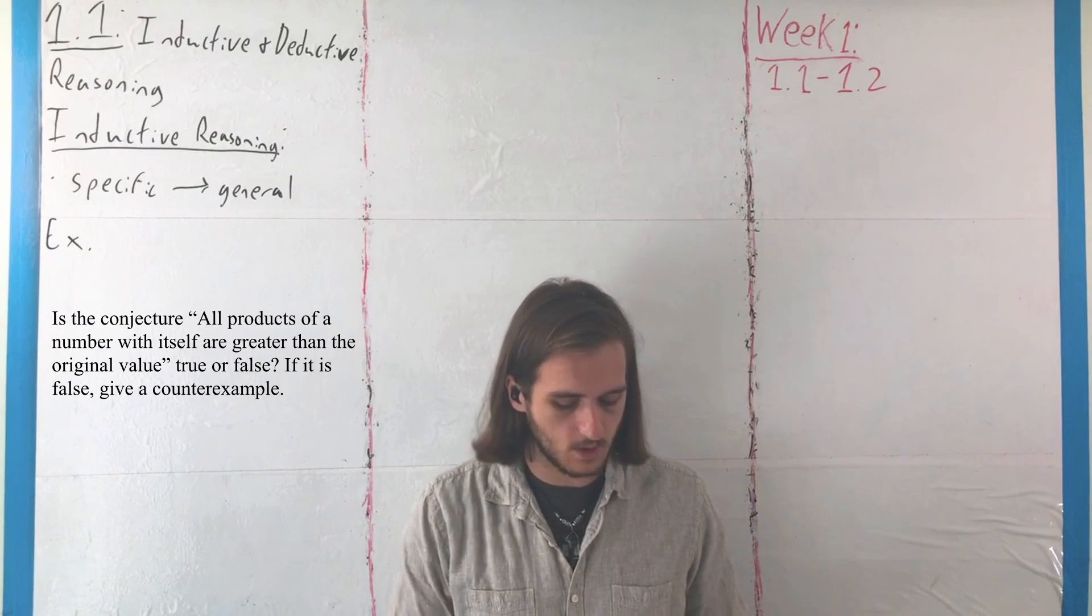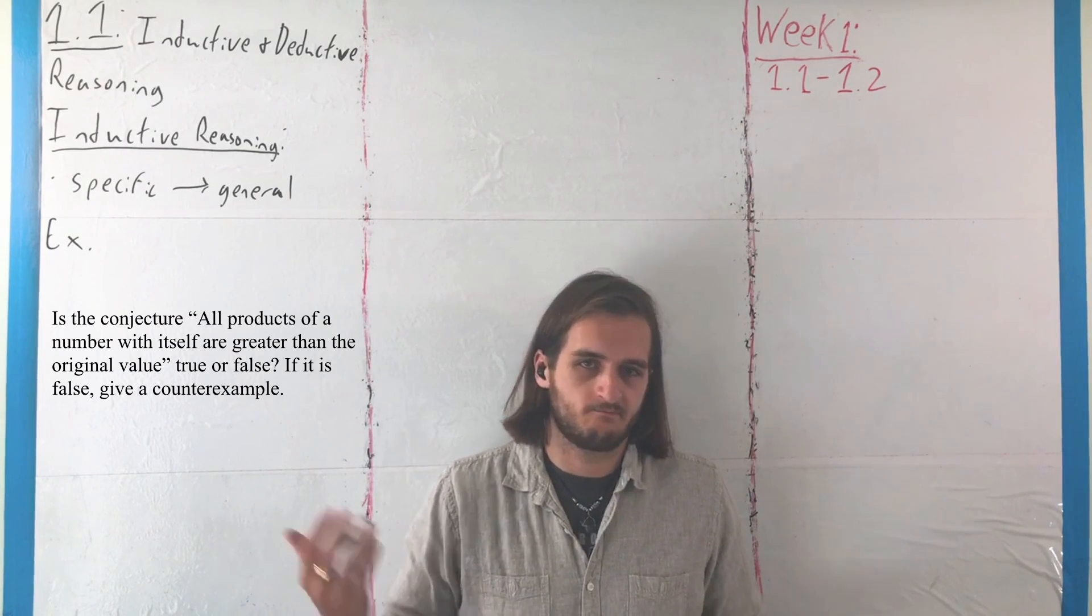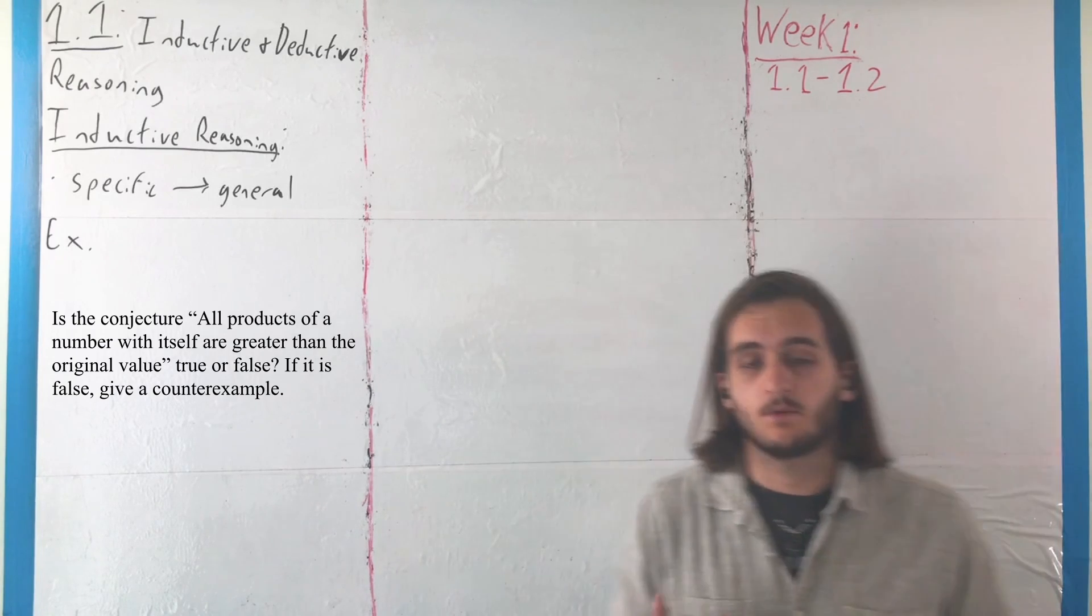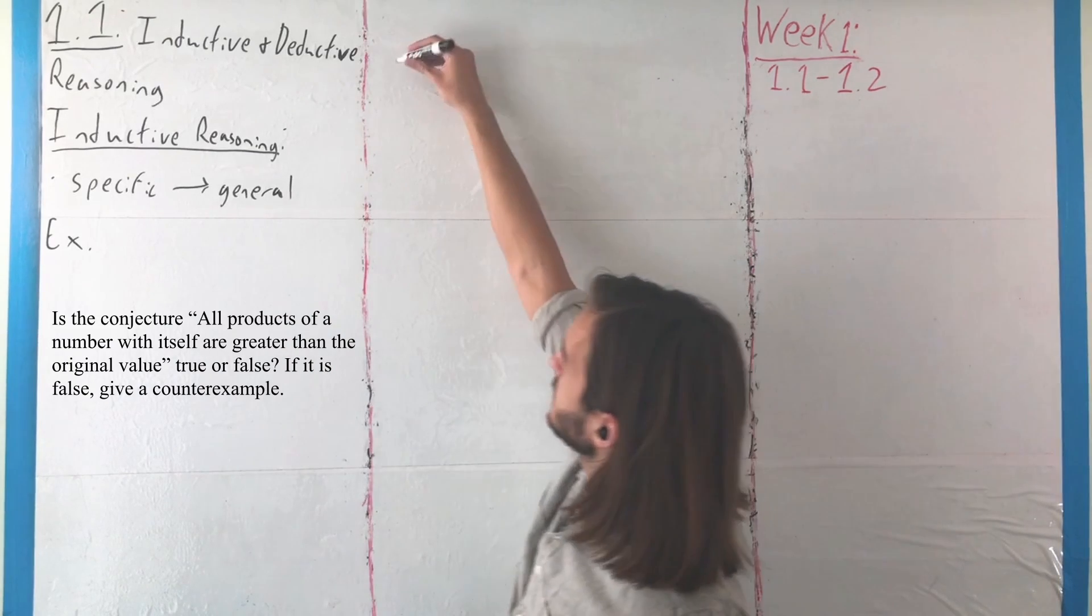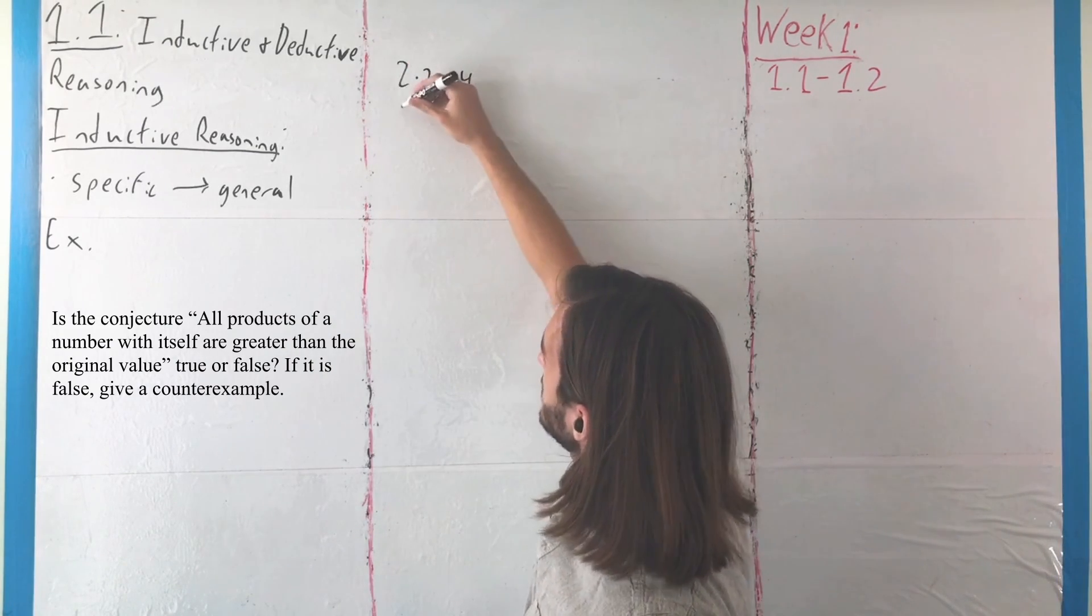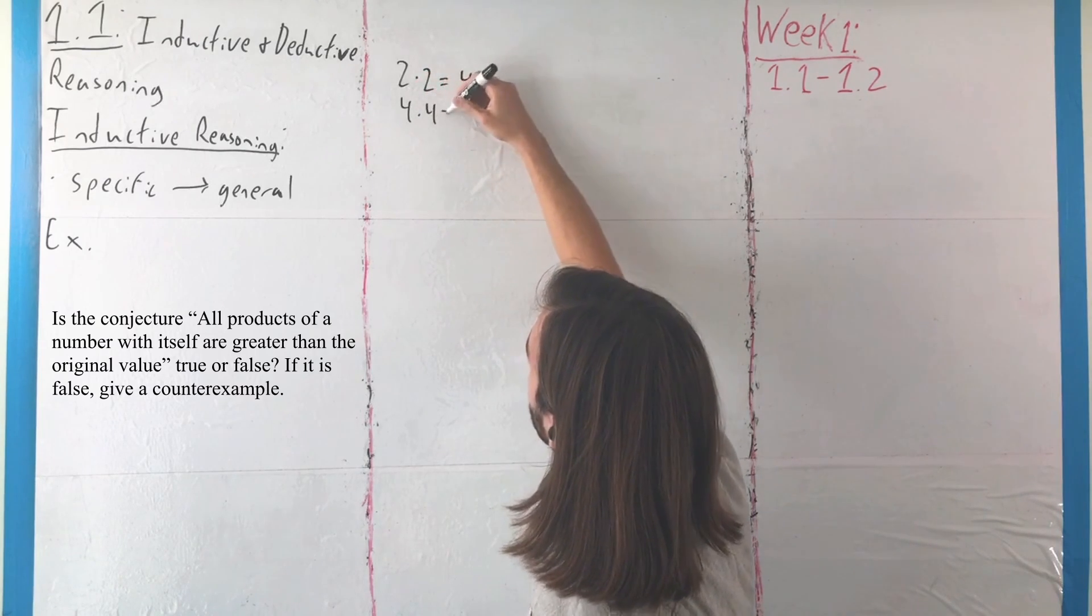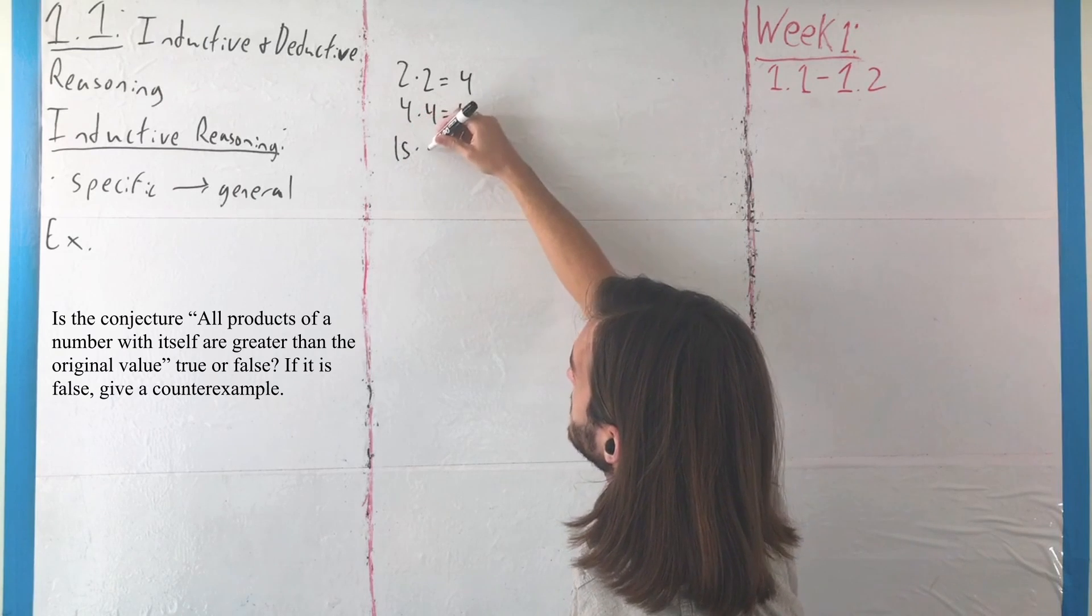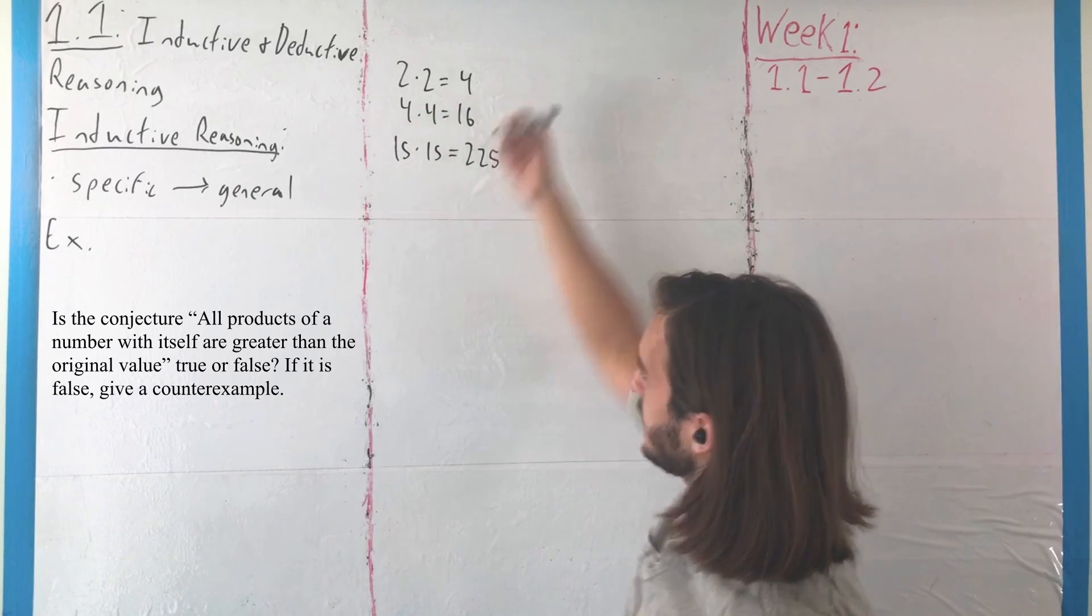In this case, some pieces we could consider are numbers that are, well, anything we might want. We're talking about numbers that are products of a thing with itself – that is, squares. If you look at something like 2 multiplied by 2, we get 4. Or if we take 4 multiplied by 4, we get 16. Or 15 multiplied by 15, we get 225.